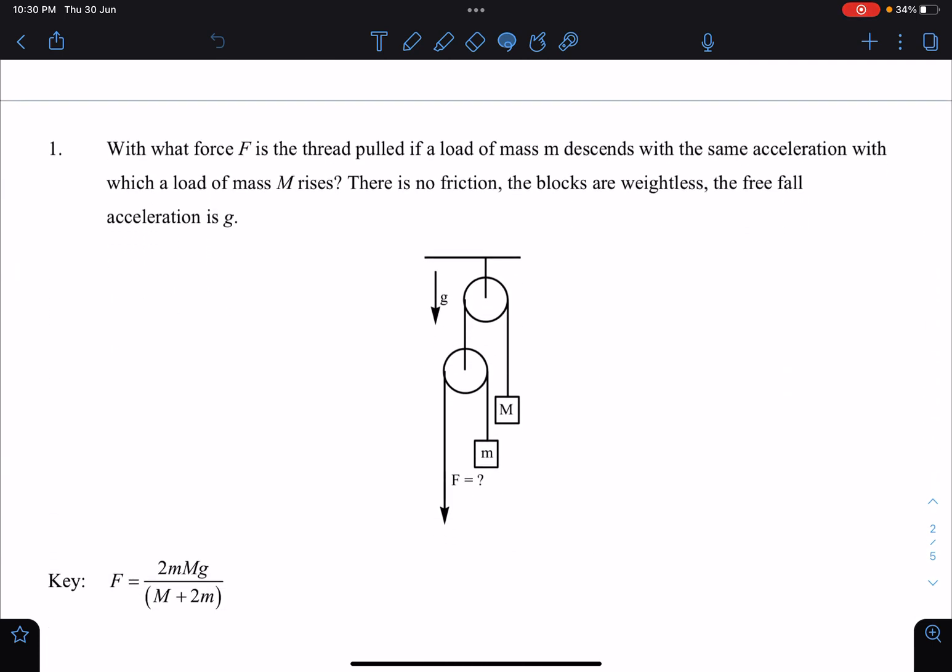With what force F is the thread pulled if a load of mass m descends with the same acceleration with which a load of mass M rises? So if this is coming down with acceleration a, this is moving up with acceleration a upwards. There is no friction, the blocks are weightless...